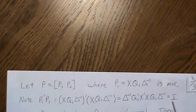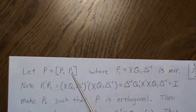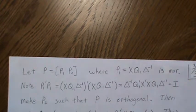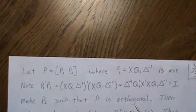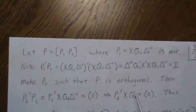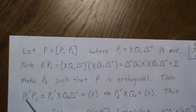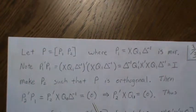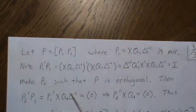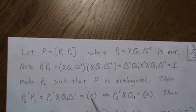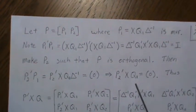Since P is m by m, we pick the other m minus r columns P2 to make P fully orthogonal — it's somewhat irrelevant what P2 is, we just need the whole thing to be orthogonal. By definition, columns of P2 dotted with columns of P1 must be zero. So P2-prime P1 equals zero, and plugging in what we know about P1 and post-multiplying by delta, this implies P2-prime x Q1 equals zero.